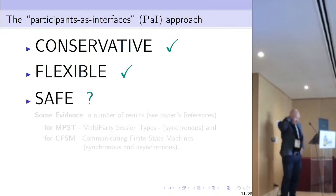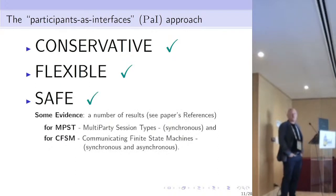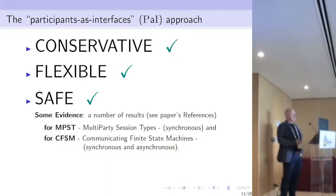We also need to check if it is safe, which we do by verifying properties on particular formalisms. It is fairly safe — we have plenty of evidence of this because there are a number of results on the safeness of this composition method, for instance in multi-party session types and in communicating finite state machines. There are results for systems that communicate synchronously, and more results for communicating finite state machines covering both synchronous and asynchronous communication.